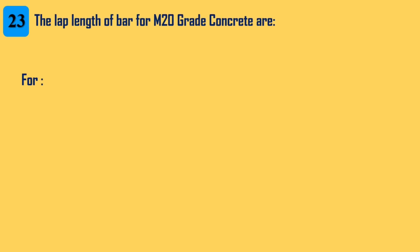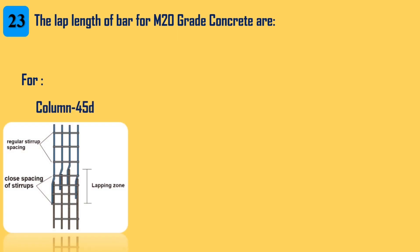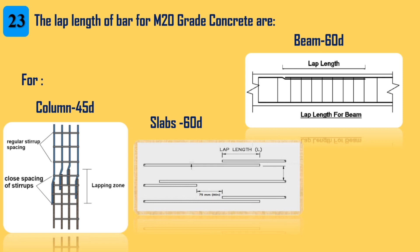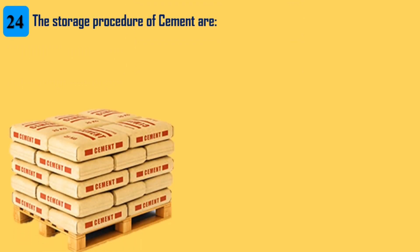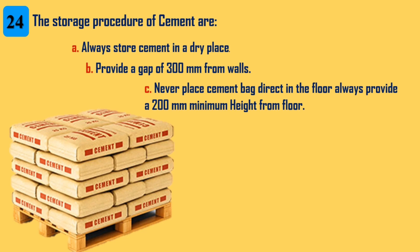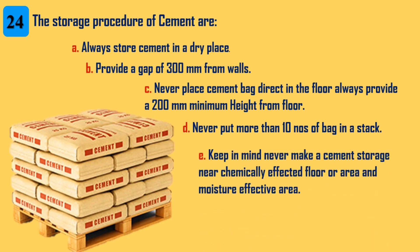23. The lap length of bar for M20 grade concrete: column is 45 diameters, slab is 60 diameters. 24. Beam is 60 diameters. The storage procedure of cement: always store cement in a dry place; provide a gap of 300 mm from walls; never place cement bag directly on the floor — always provide a minimum height of 200 mm from floor; never put more than 10 bags in a stack; never make a cement storage near a chemically affected or moisture-prone area.